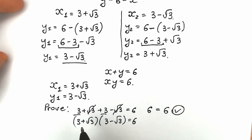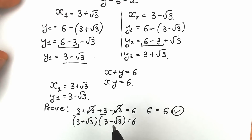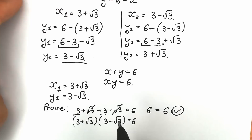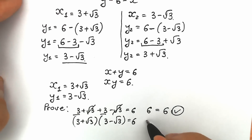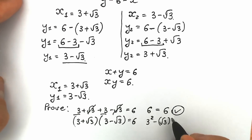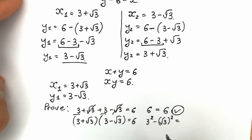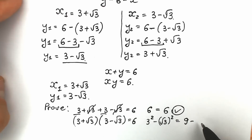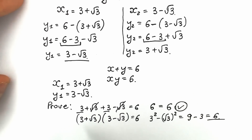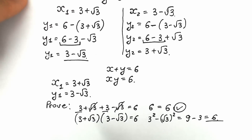For the second equation, x₁ times y₁ equals (3 plus square root of 3) times (3 minus square root of 3). This is the difference of squares identity: 3 squared minus (square root of 3) squared equals 9 minus 3 equals 6. Our roots are absolutely correct.